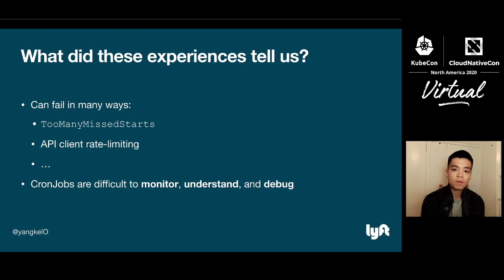What did these experiences tell us? Well, we learned that cron jobs can fail in many surprising ways that we did not know about before. The first of which is the too many missed starts condition, which is where if a cron job has failed too many times in a row, then the Kubernetes machinery ends up giving up entirely on trying to run them and requires human intervention to start the cron job again. Next, we saw that API client rate limiting can be a factor. When the cron job controller does the sync the world operation, it requires a lot of calls to the API server. And these can get rate limited and impact the speed at which the cron job controller can process and sync cron jobs. This combined with starting deadline seconds can lead to some disastrous effects where cron jobs get missed entirely.